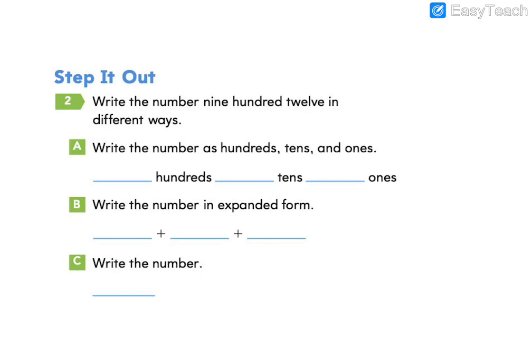Let's look at the second problem. You're going to write the number 912 in different ways. The first thing you're going to do is write it as hundreds, tens, and ones. Well, let's think. Nine hundred twelve. We can hear those nine hundreds in there. And let's think about the number 12. 12 is made of one ten and two ones.